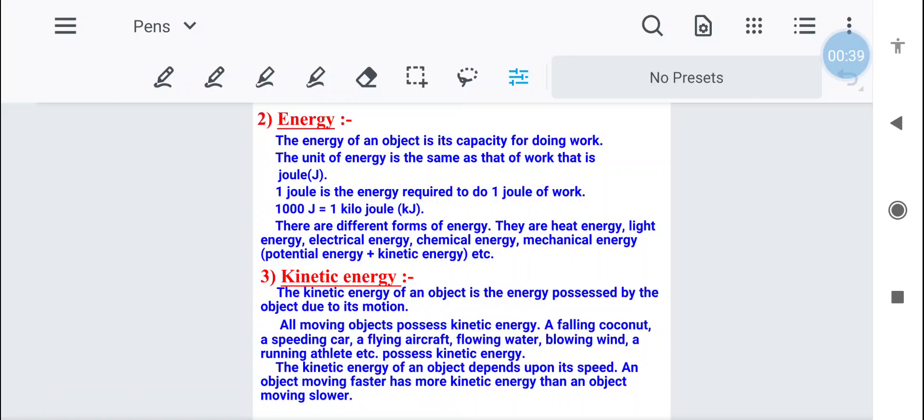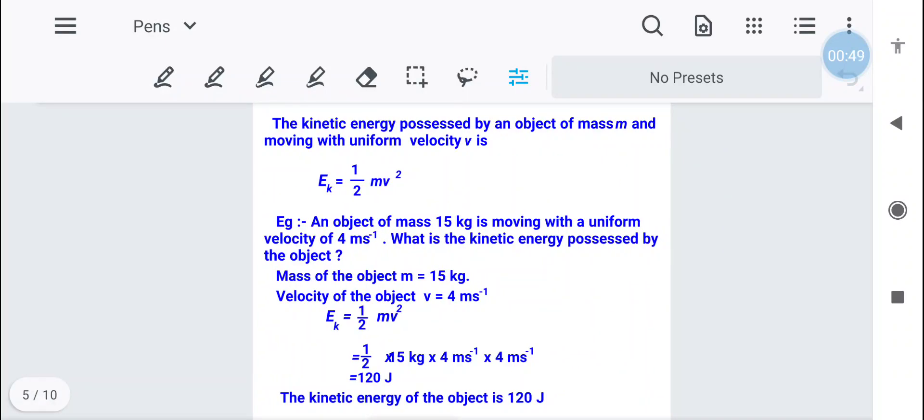So kinetic energy is the energy possessed by that particular object due to its motion. Now we will look at the formula. Kinetic energy possessed by an object.